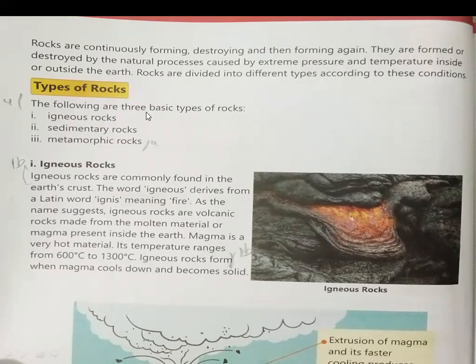Types of rocks. The following are three basic types of rocks. Number one, igneous rocks. Number two, sedimentary rocks. Number three, metamorphic rocks.